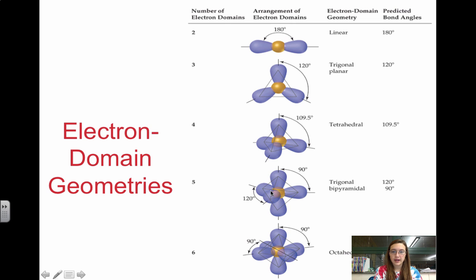Five is trigonal bipyramidal, and six is octahedral. Again, this is just focusing on the regions of electrons around the central atom. These are our general shapes—the general shapes—and every other shape is derived from one of these.